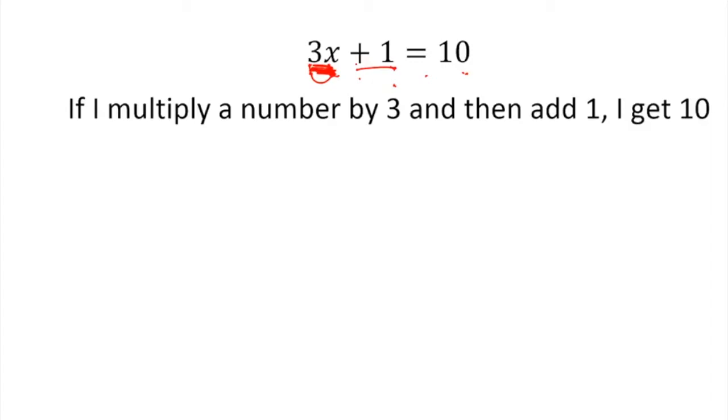And so what we're talking about is if I multiply a number by 3 and then add 1, I get 10. That's the translation. And hopefully you can see quite easily that that mystery number you're talking about will be 3, because 3 times 3 is 9, plus 1 is 10.